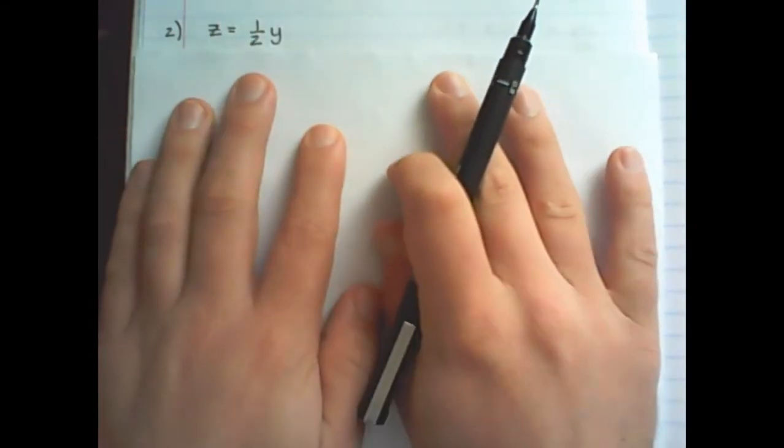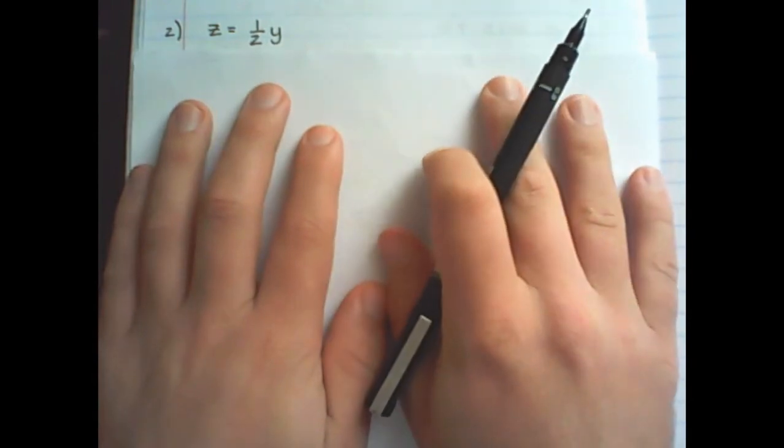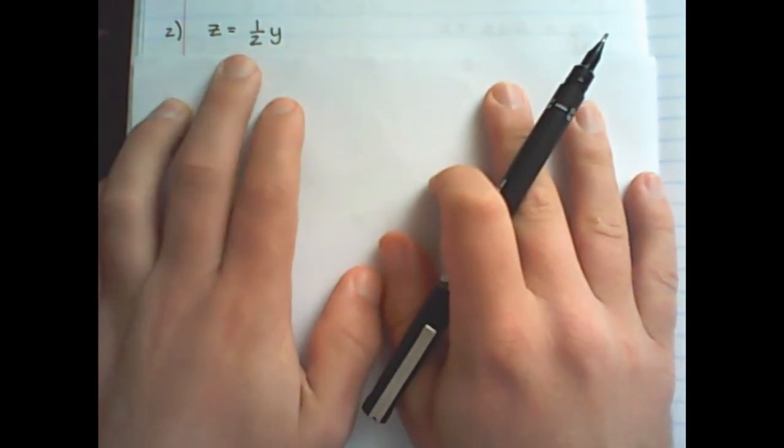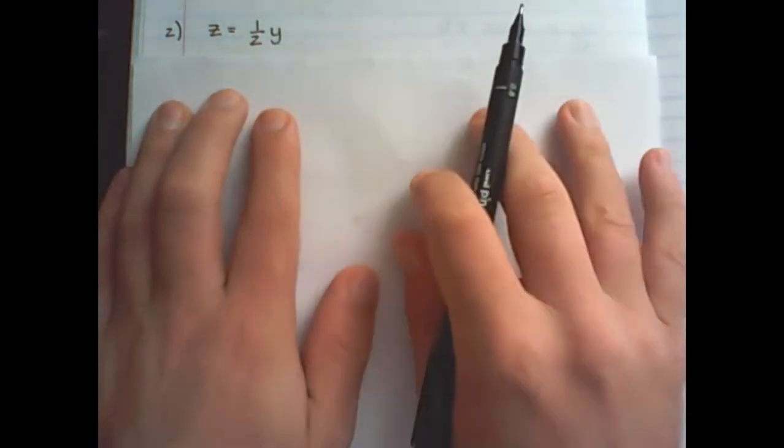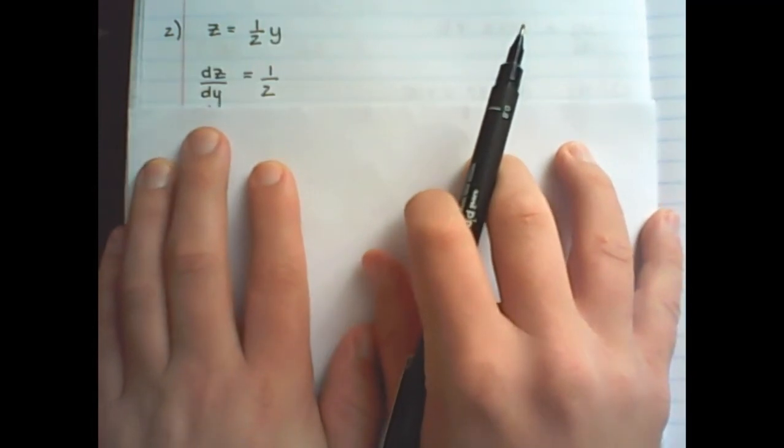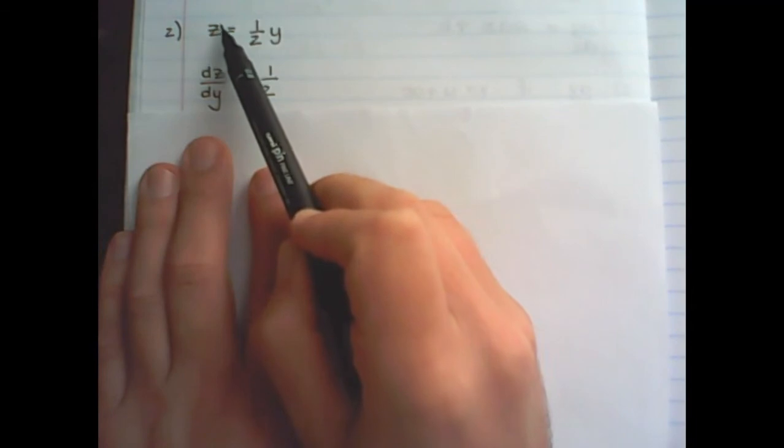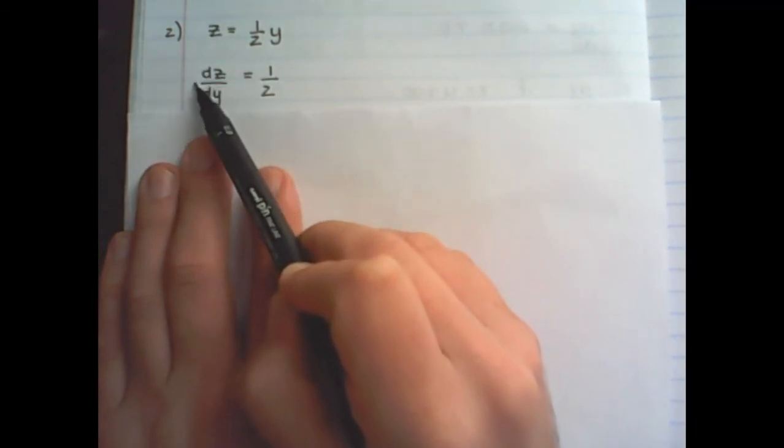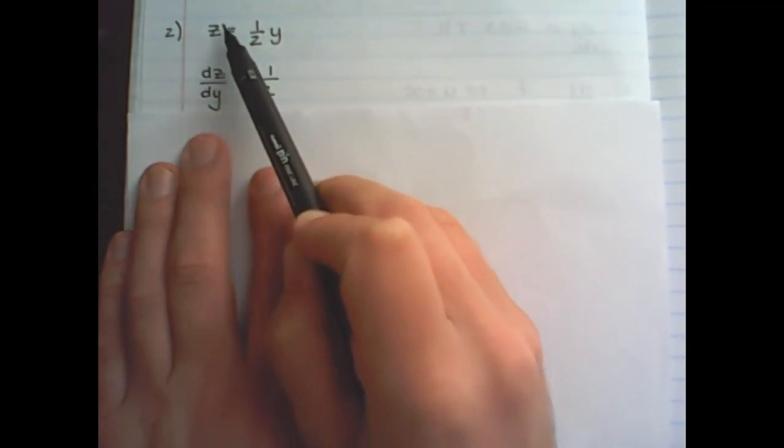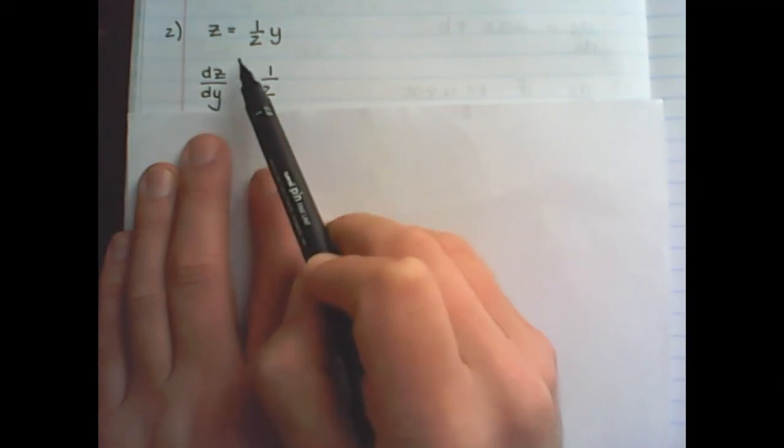Now let us find dz/dy. So I have z is equal to a half of y. So dz/dy is simply a half. So I take the equation of z, that is where the dz is, and I want to differentiate the y's in that equation.